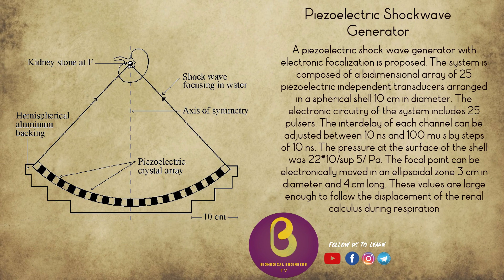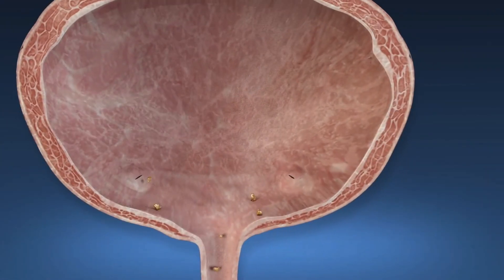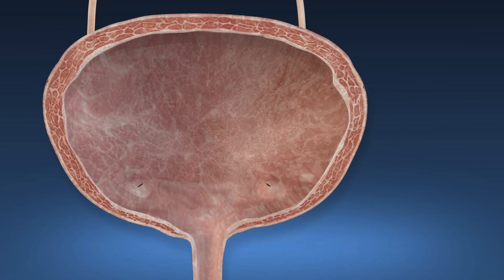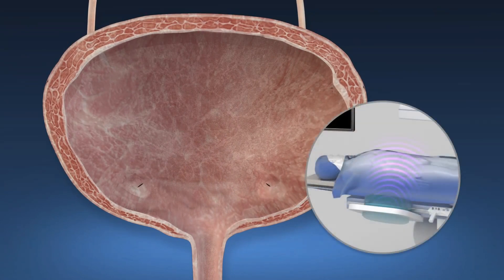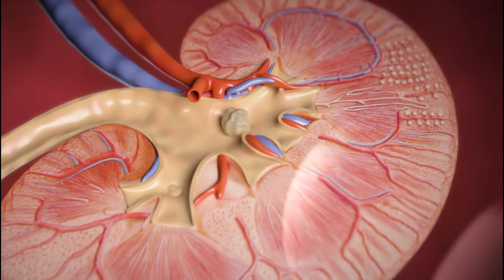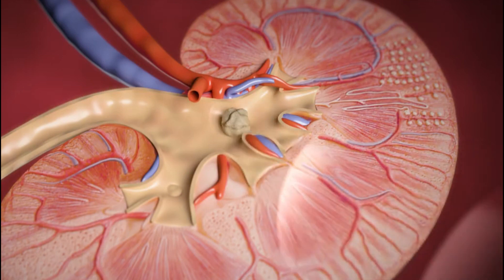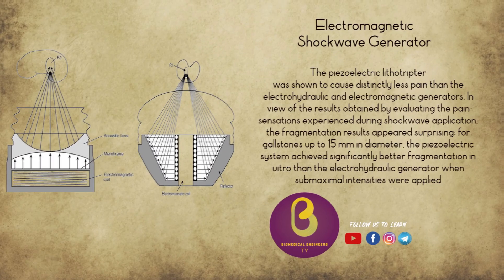The Curie brothers first demonstrated the piezoelectric effect in 1880. The following year, Gabriel Lippmann theorized the reversibility of this effect, which was later confirmed by the Curie brothers. The piezoelectric generator takes advantage of this effect: piezoelectric ceramics or crystals set in a water-filled container are stimulated via high frequency electrical pulses. The alternating stress and strain changes in the material create ultrasonic vibrations, resulting in the production of a shockwave.